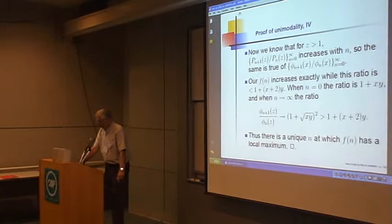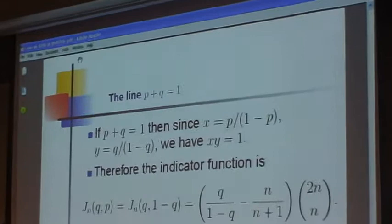So there's a unique value if p plus q equals 1 and x times y equals 1. And we can evaluate this because the integer polynomials are normal.